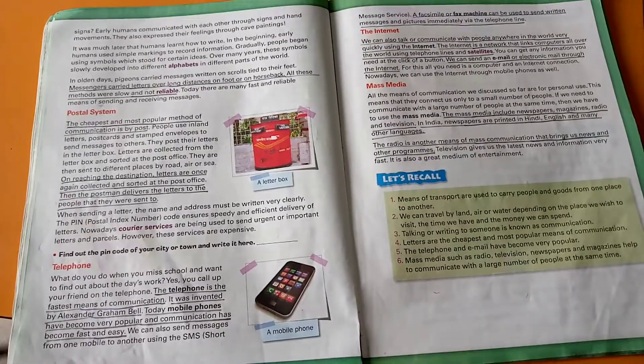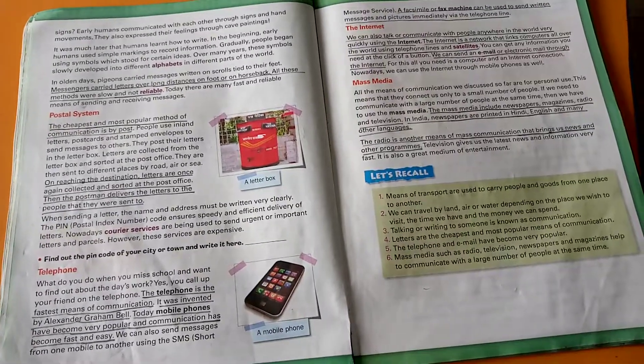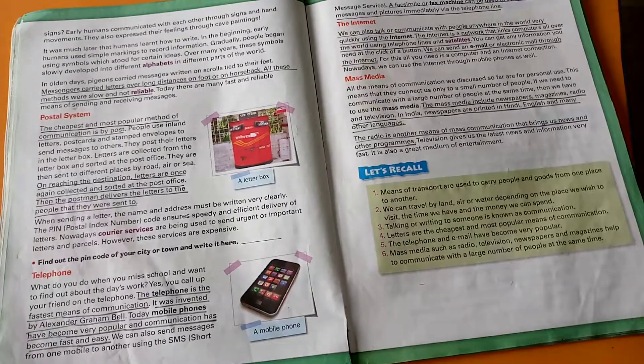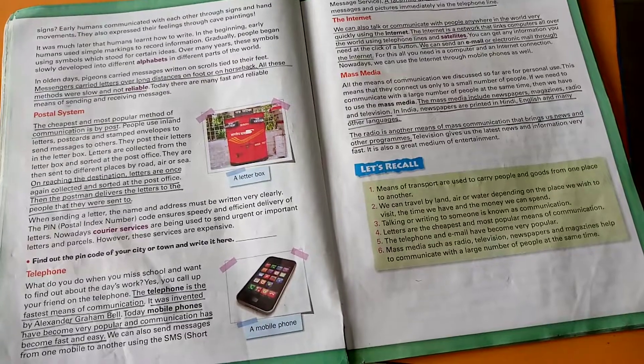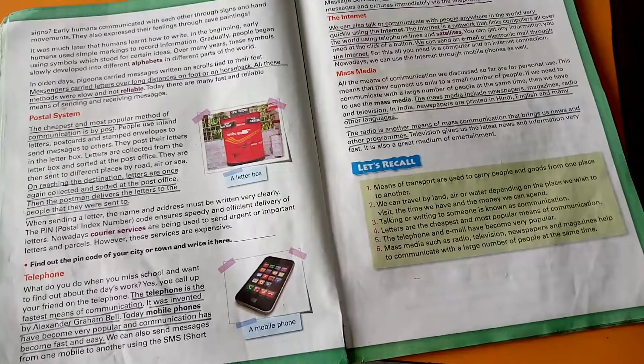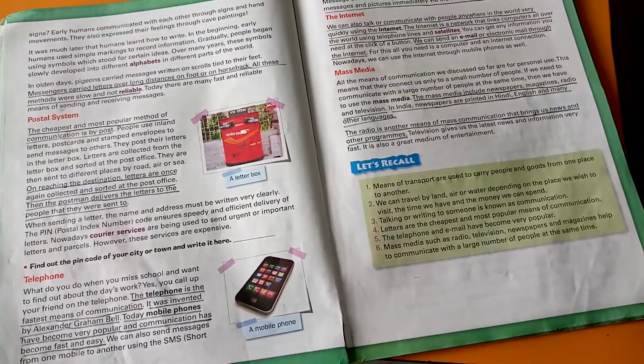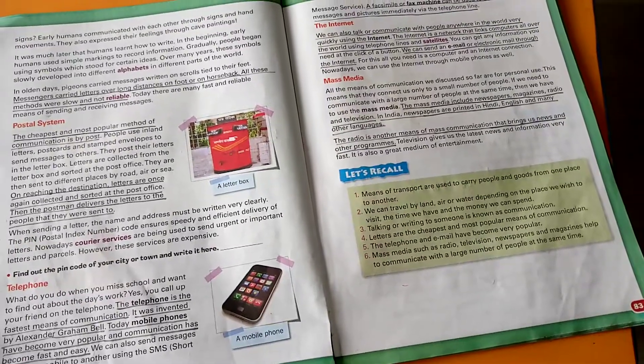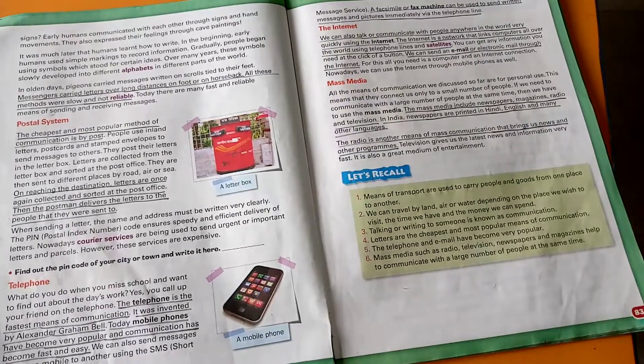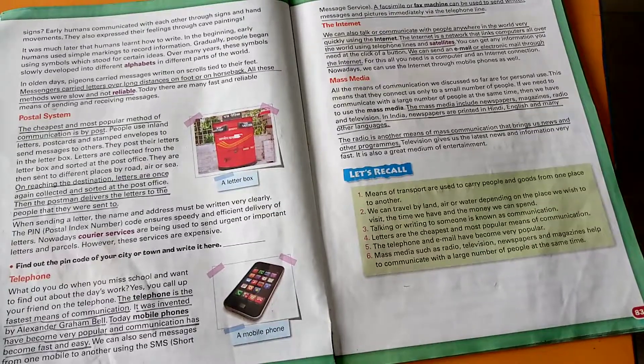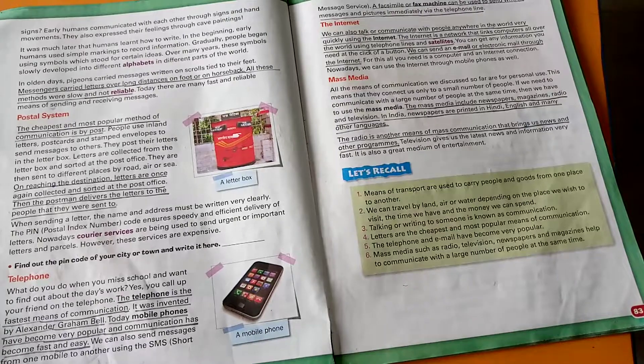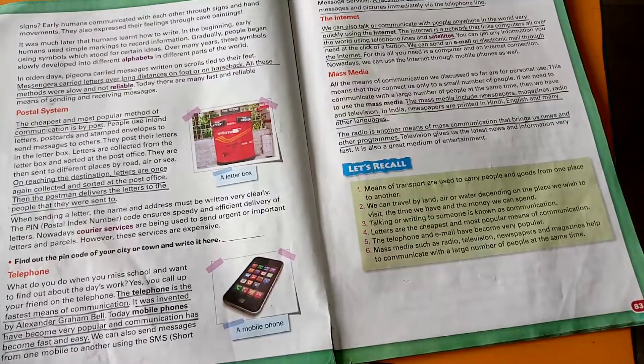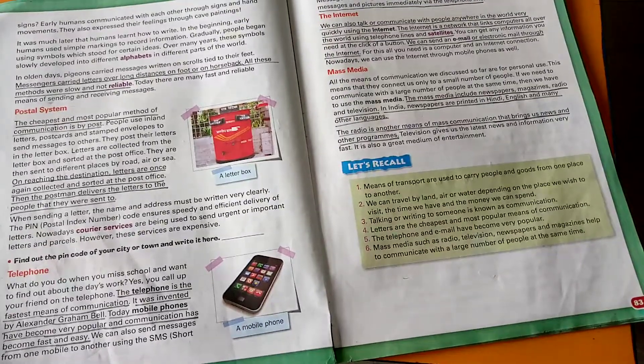The last topic of this chapter is mass media. All the means of communication we discussed so far are for personal use. This means that they connect us only to a small number of people. If we need to communicate with a large number of people at the same time, then we have to use the mass media. The mass media include newspapers, magazines, radio and television. In India, newspapers are printed in Hindi, English and many other languages. The radio is another means of mass communication that brings us news and other programs. Television gives us the latest news and information very fast. It is also a great medium of entertainment.